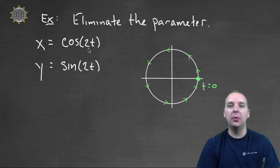if T was zero you'd be at the point one comma zero. Cosine of zero is one, that's your X. Sine of zero is zero, and so your Y is zero. So at time zero you'd be at the point one zero.